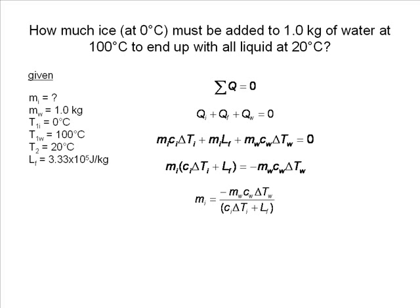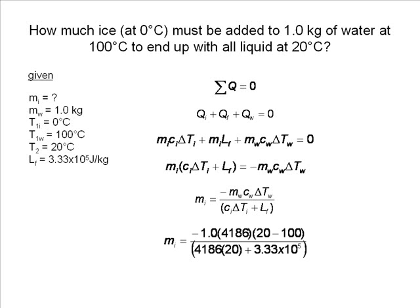Now we can input our known values into the equation. We use the specific heat of water, not ice, for CI because the ice has changed into water when it is gaining heat from 0 to 20 degrees Celsius.